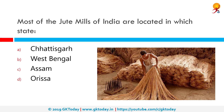Most of the jute mills of India are located in which state? The correct answer is West Bengal. There are 78 jute mills in India, of which 61 are in West Bengal located along the riverside of Hooghly. Three each are in Bihar and UP, seven in Andhra Pradesh, and one each in Assam, Odisha, Chhattisgarh, and Tripura.